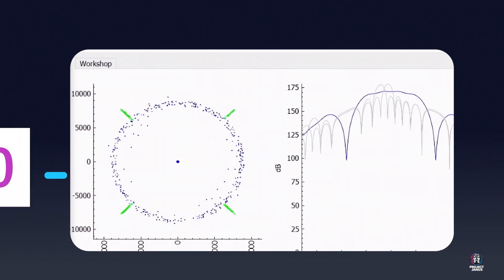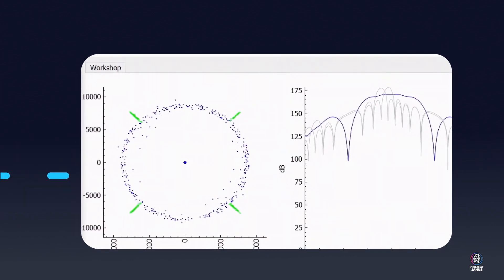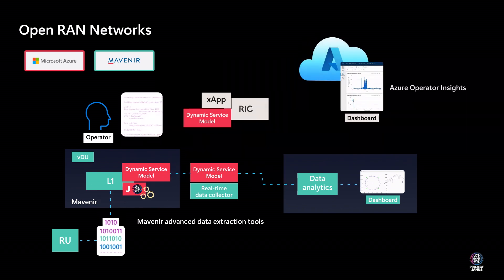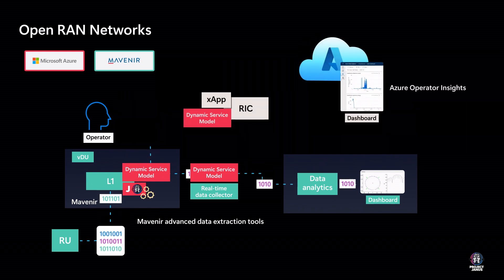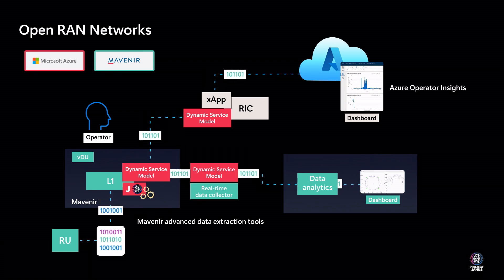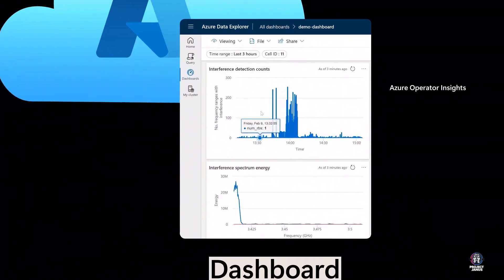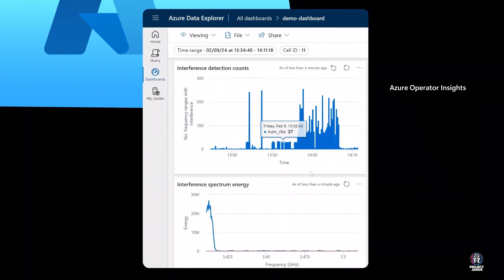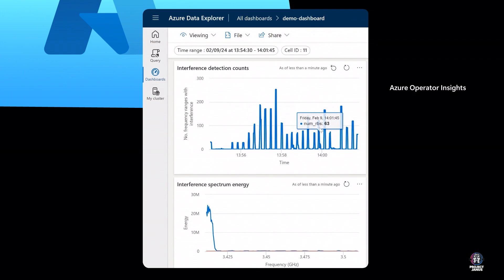Mavenir's advanced debugging tool addresses on-site data needs, such as IQ sample extraction. This on-site debugging tool, loaded with selected codelets and configurations in real-time, significantly reduces DU debugging data acquisition time. The programmable RAN platform's versatility is evident as a different codelet on the same hookset creates a new use case, like interference detection, correlating L1 scheduling information and IQ samples in real-time within the existing Mavenir DU product.